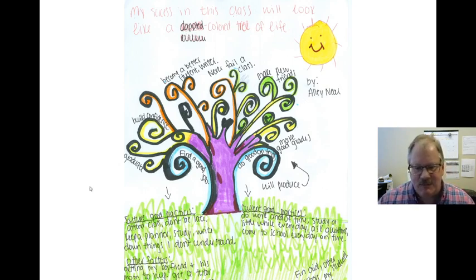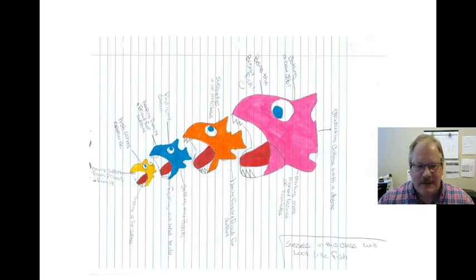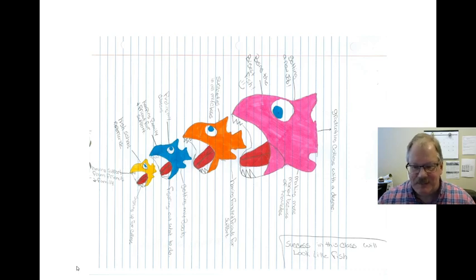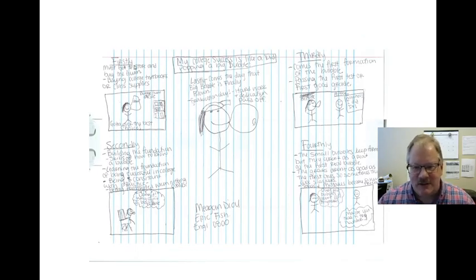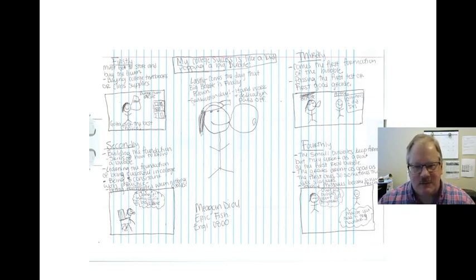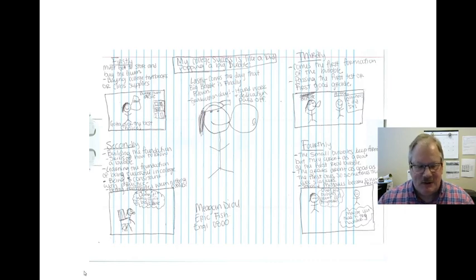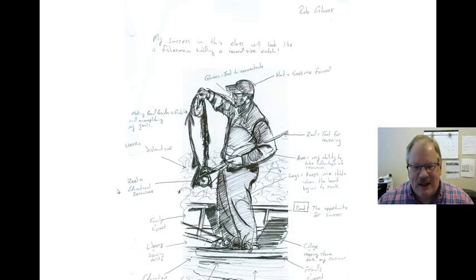This one has the sun labeled — good metaphor, good labeling showing us what success looks like. When you start college, you're a little fish trying to grow up and become one of the big fish when you graduate and are ready for the job market. This one — success is learning how to blow a bubble. Notice she's used stick figures; she may not be the greatest artist, but she has a good metaphor going, labels everything about the process, and there she is blowing a bubble.